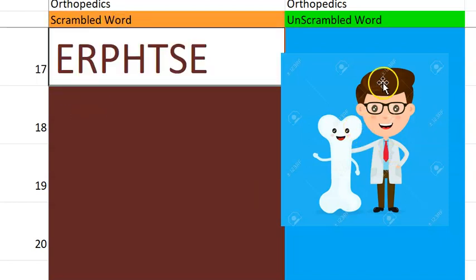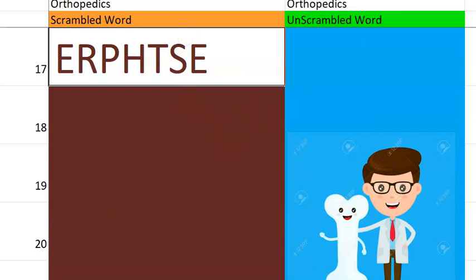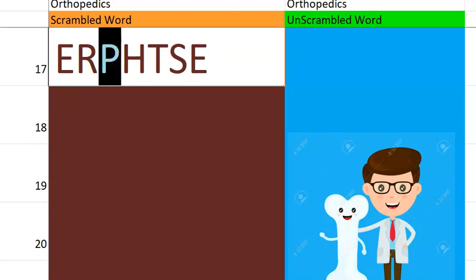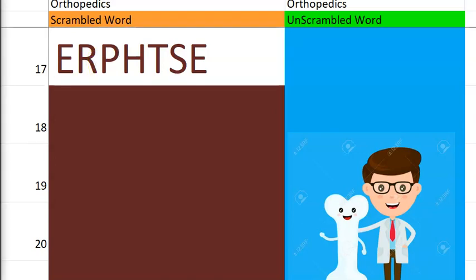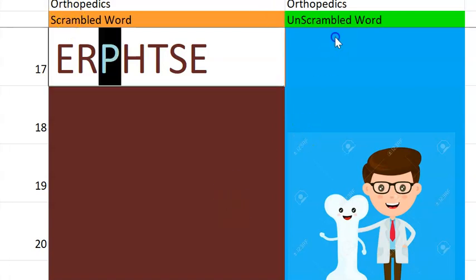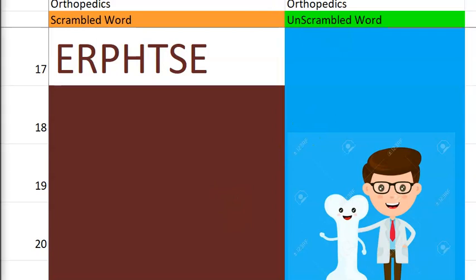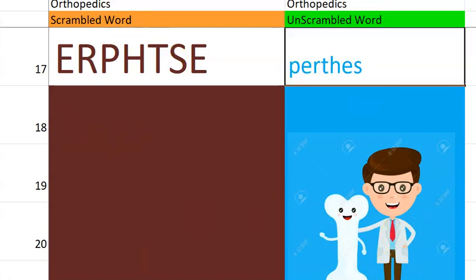Now let's go to the seventeenth one. What is this? Think orthopedics. The clue is that it begins with a P. It is a disease of the hip. So it is Perthes disease. Very good.